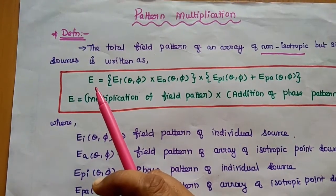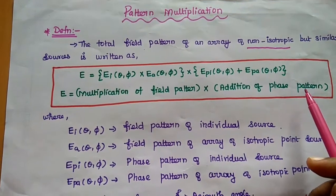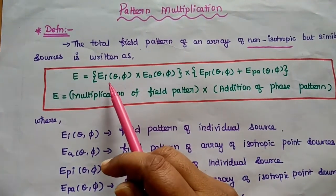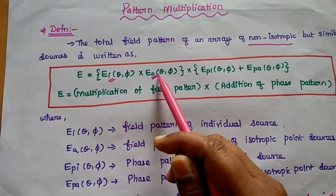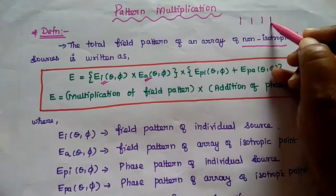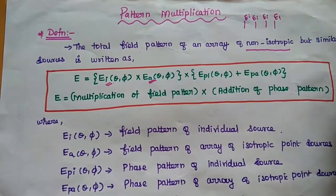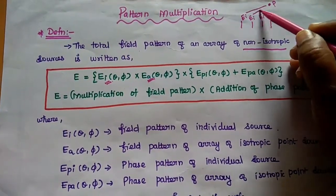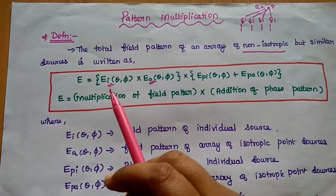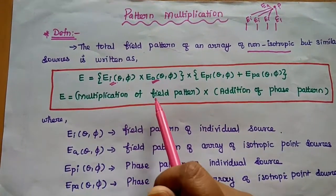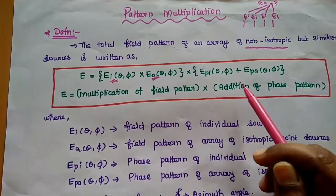The total electric field is equal to the multiplication of the field pattern into the addition of the phase pattern. Multiplication of field pattern means we are going to multiply the electric field of the individual element into that array element. For example, consider there are N number of arrays — each element can produce an individual electric field. At a distant point P, we can add all those fields, which gives the array electric field at that distant point.